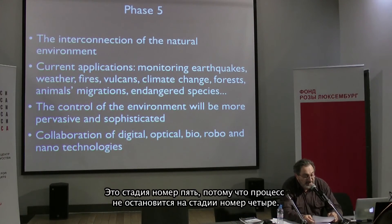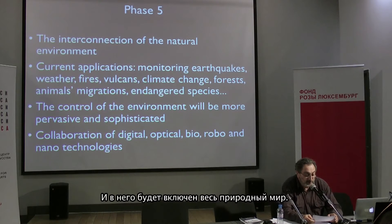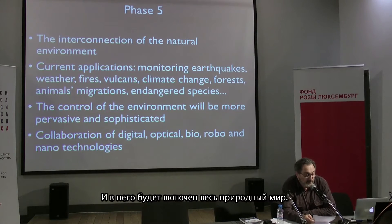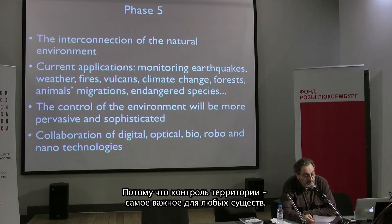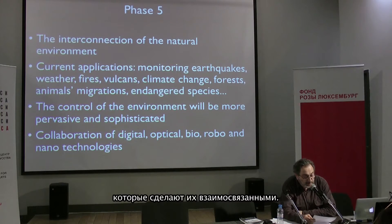This process will not stop. Internet of Things could become the most pervasive and effective control system of the territory ever invented by a species, since the first step will be the interconnection of the natural environment. For all species — therefore for humans too — territory inspecting and controlling are primary activities.